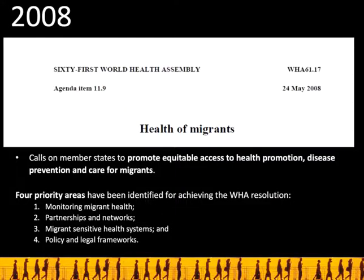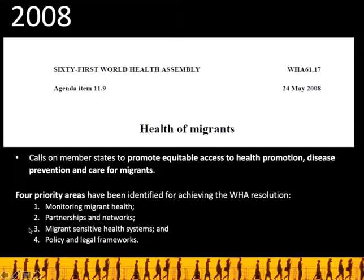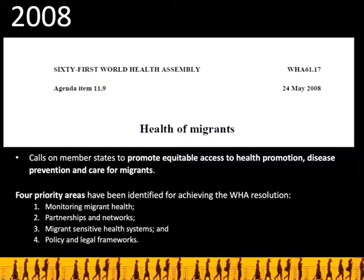In 2008, the World Health Assembly passed a resolution on the health of migrants. This was an important moment — it provided a strong advocacy tool for mobilising and holding states accountable for their responses to the health of people on the move. A framework was developed around four priority areas: monitoring migrant health; partnerships and networks required in responding to migration and health; the development of migrant-sensitive health systems; and policy and legal frameworks. What's important here is a clear focus on the language of the individual migrant — migrant-sensitive health systems and cultural competency — but at this stage the language of migration and mobility as a systemic issue was not effectively brought in.